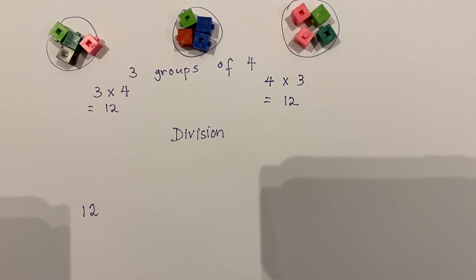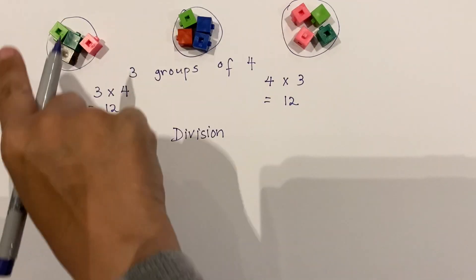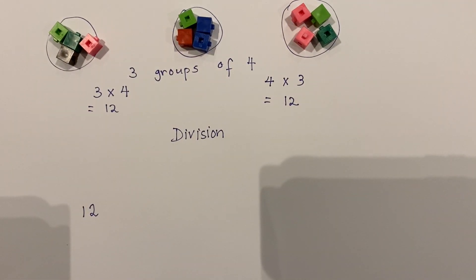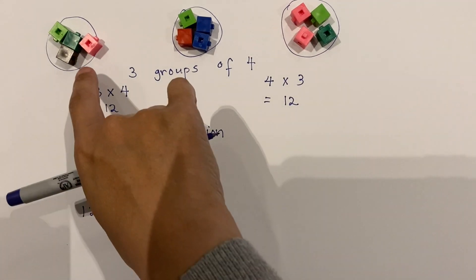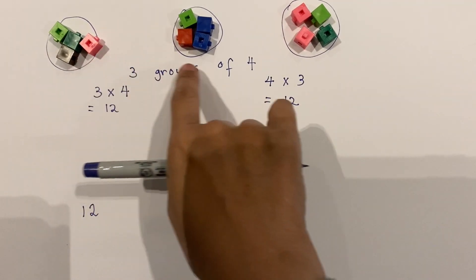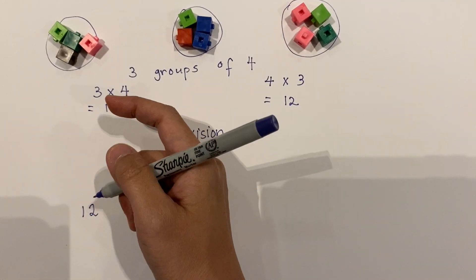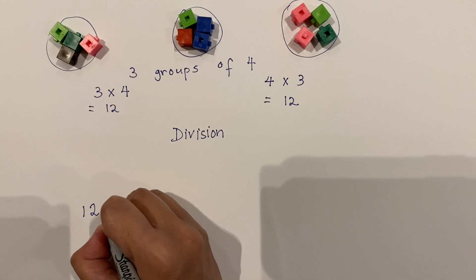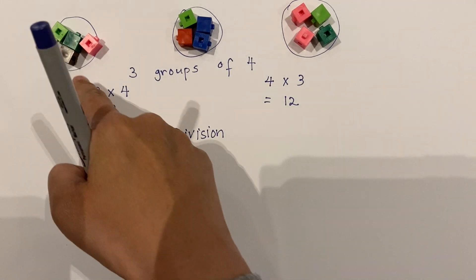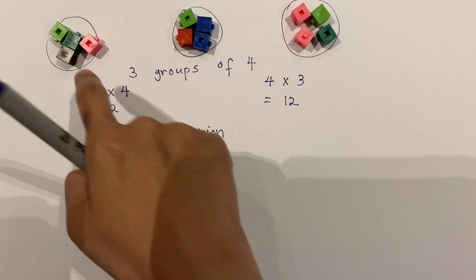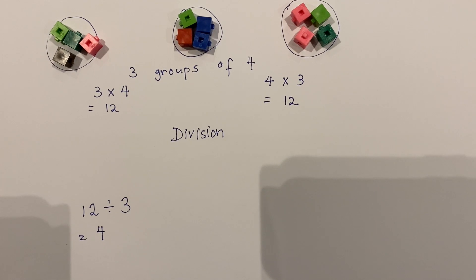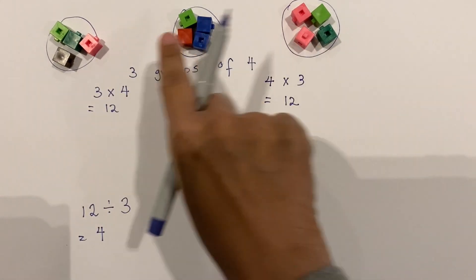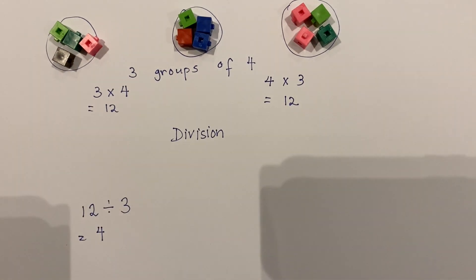The total means all together, and that total is 12. So I can ask: there is a total of 12 cubes, and this 12 cubes is shared among three groups. How many cubes are there in each group? So it's 12 divided by 3, and my answer is four cubes in each group.